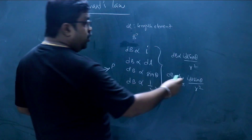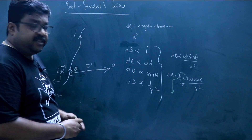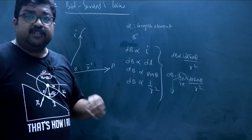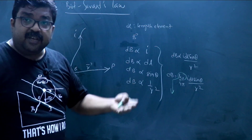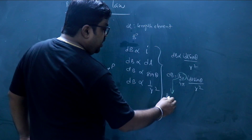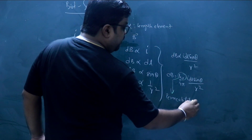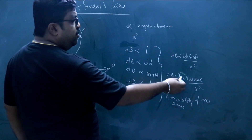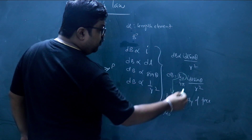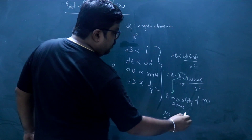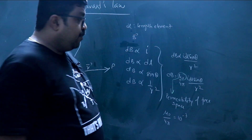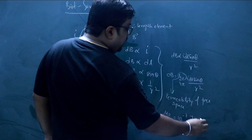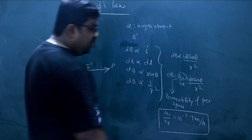The quantity μ₀ is called the permeability of free space. This quantity depends on the nature of the medium — for free space it is μ₀, and for some other medium it will be μ, the permeability of that medium. The value of μ₀/4π is 10⁻⁷ Tesla·meter per ampere — here 4π is also a constant, so μ₀/4π equals 10⁻⁷ T·m/A.